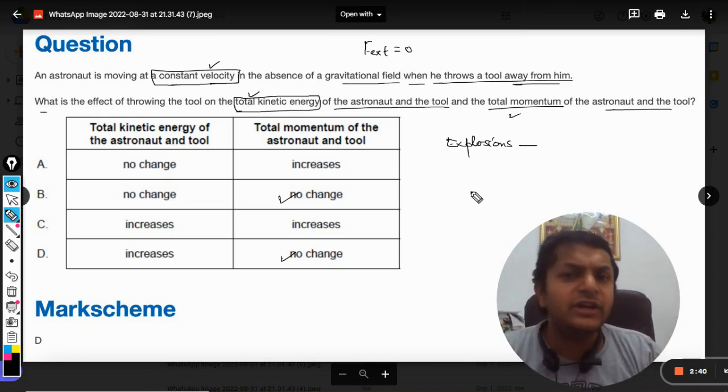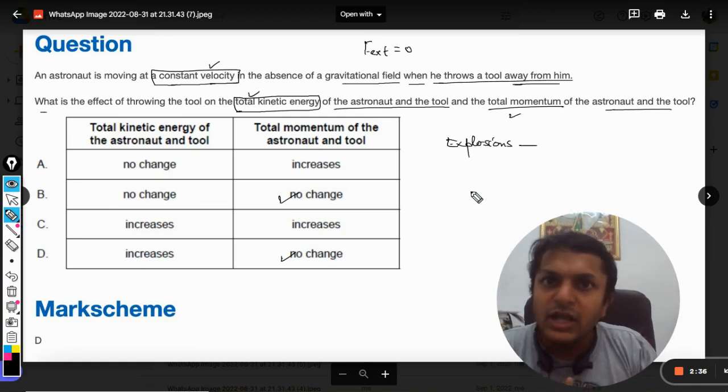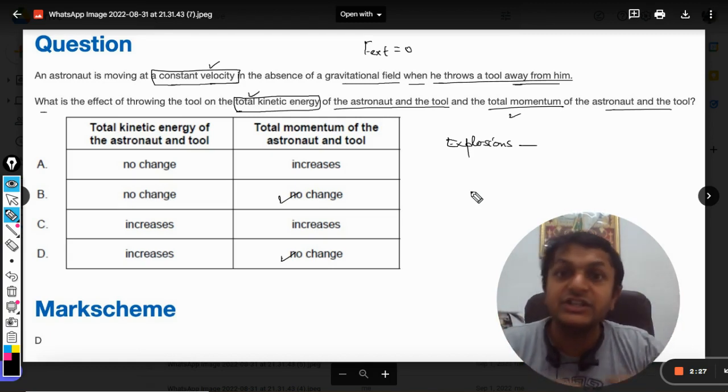But yeah, energy cannot be created nor destroyed. It comes from the chemical energy of the bomb. But when we are considering only and only mechanical energy, that is kinetic and the potential, we can say that energy is created, energy is generated.